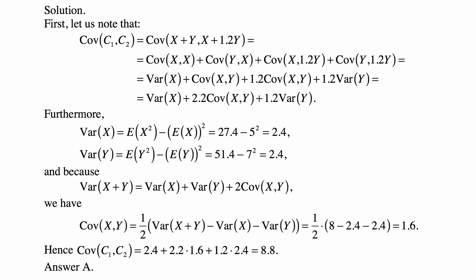and the same for X + 1.2Y. So the result is that you can just separate the covariance of X and X, covariance of Y and X, covariance of X and 1.2Y, and covariance of Y and 1.2Y. And it's the sum of all of those.